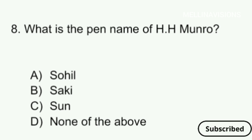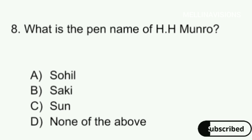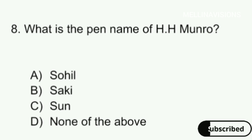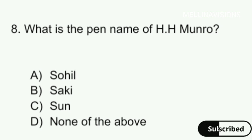What is the pen name of H.H. Monroe? Options are: A. Saki, B. Sagi, C. Son, D. Nennav Debo.